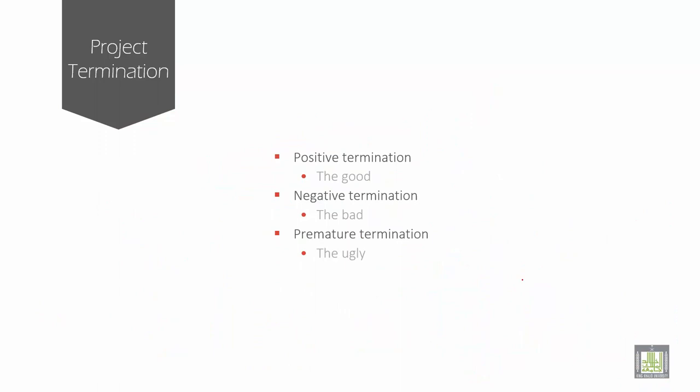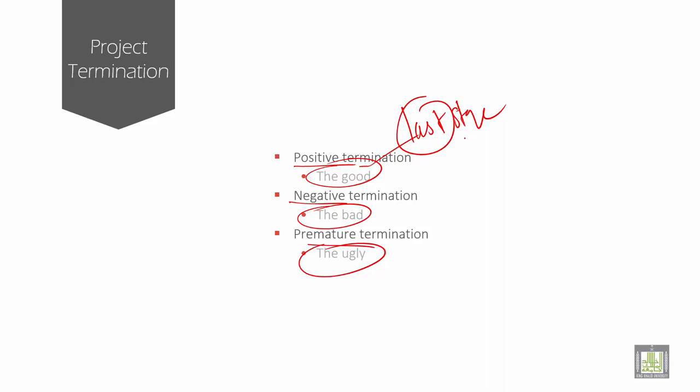Then project termination. There are three types: positive, negative, and premature. Positive termination is the last stage of managing the project, occurring after the implementation phase has ended. A review is undertaken with the client and other project stakeholders, during which the project outcomes are evaluated against the project's stated aims and objectives.